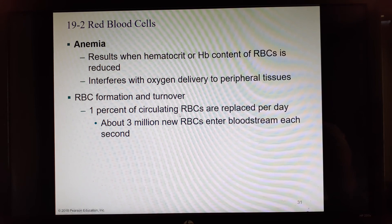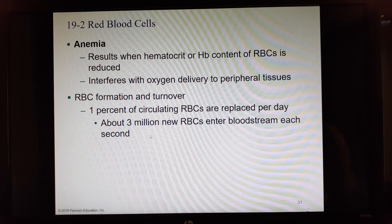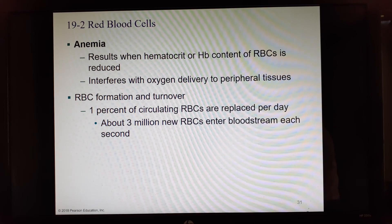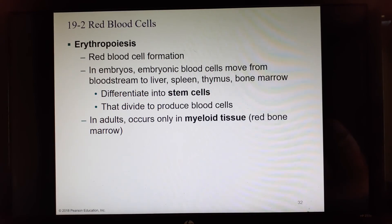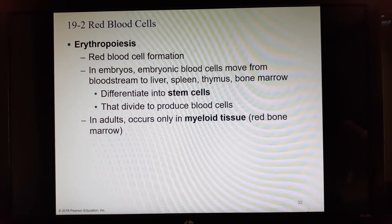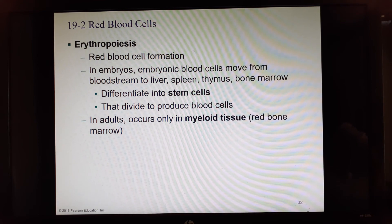About 1% of circulating red blood cells are replaced every day, with about 3 million new red blood cells entering your bloodstream every second. You are very busy making red blood cells. The process of making red blood cells is called erythropoiesis — 'poiesis' means formation, and 'erythro' refers to red cells.